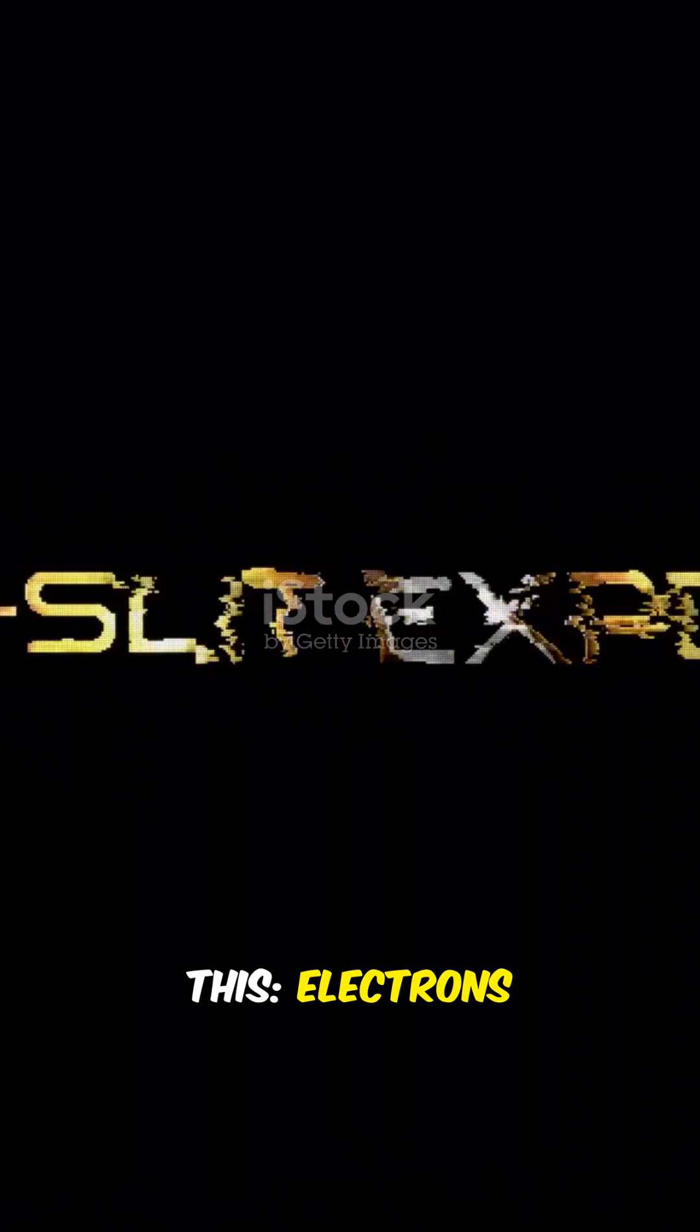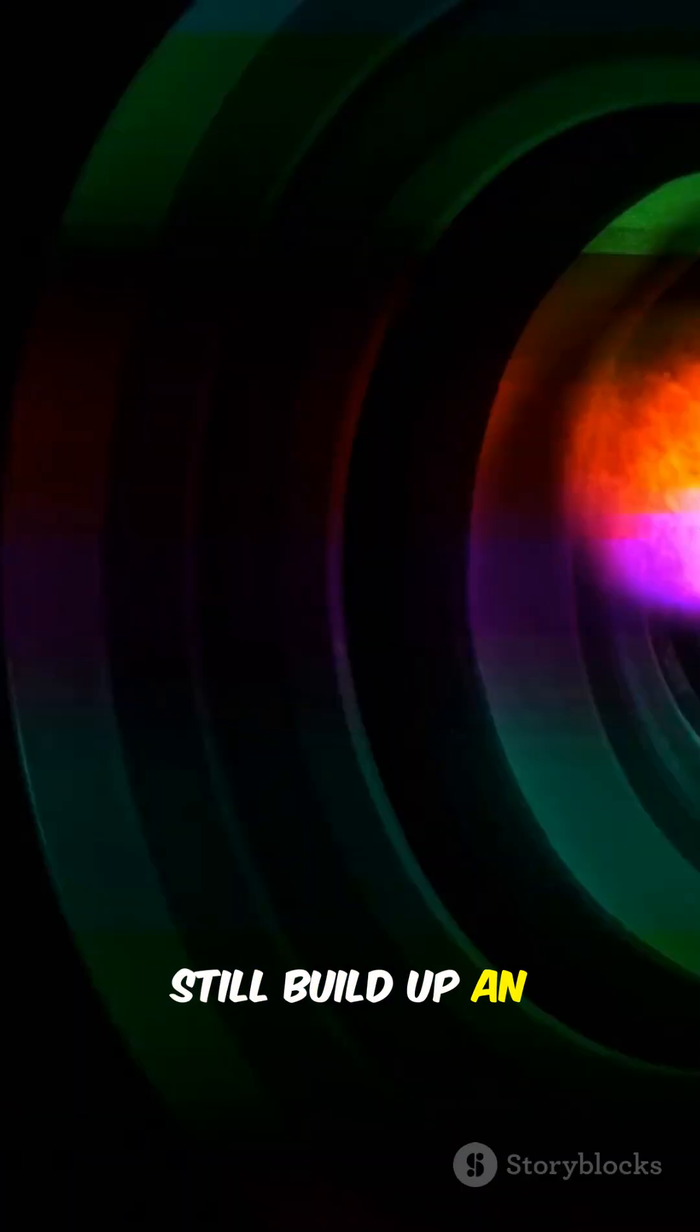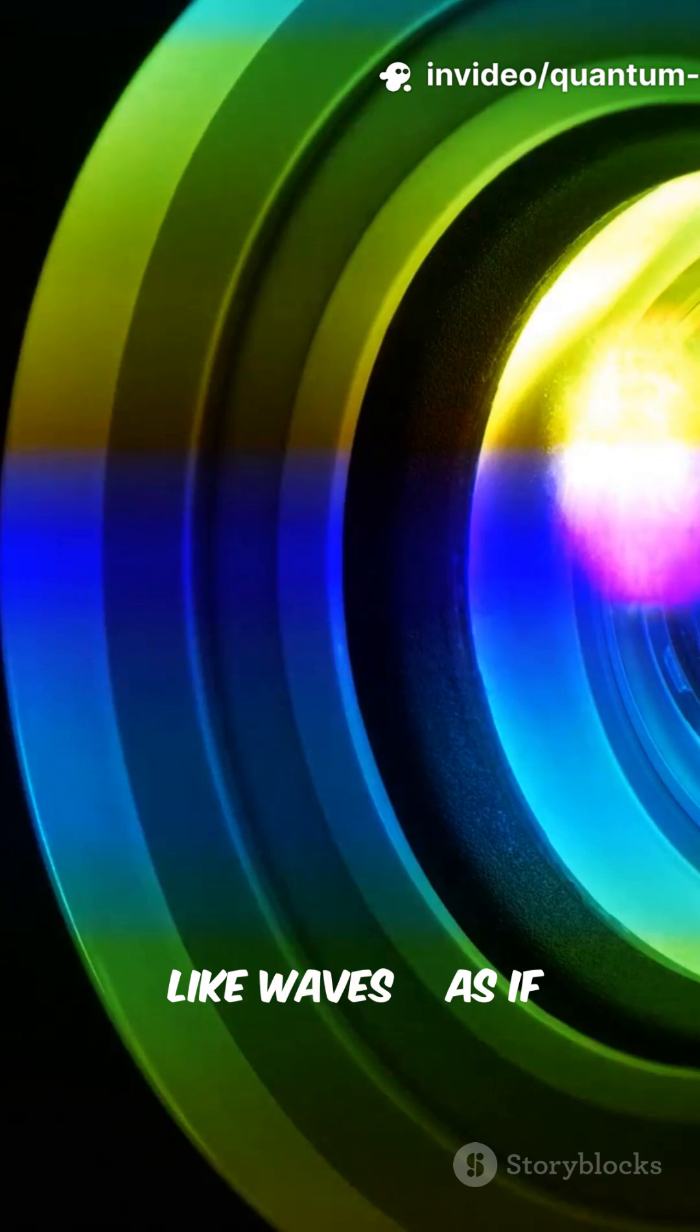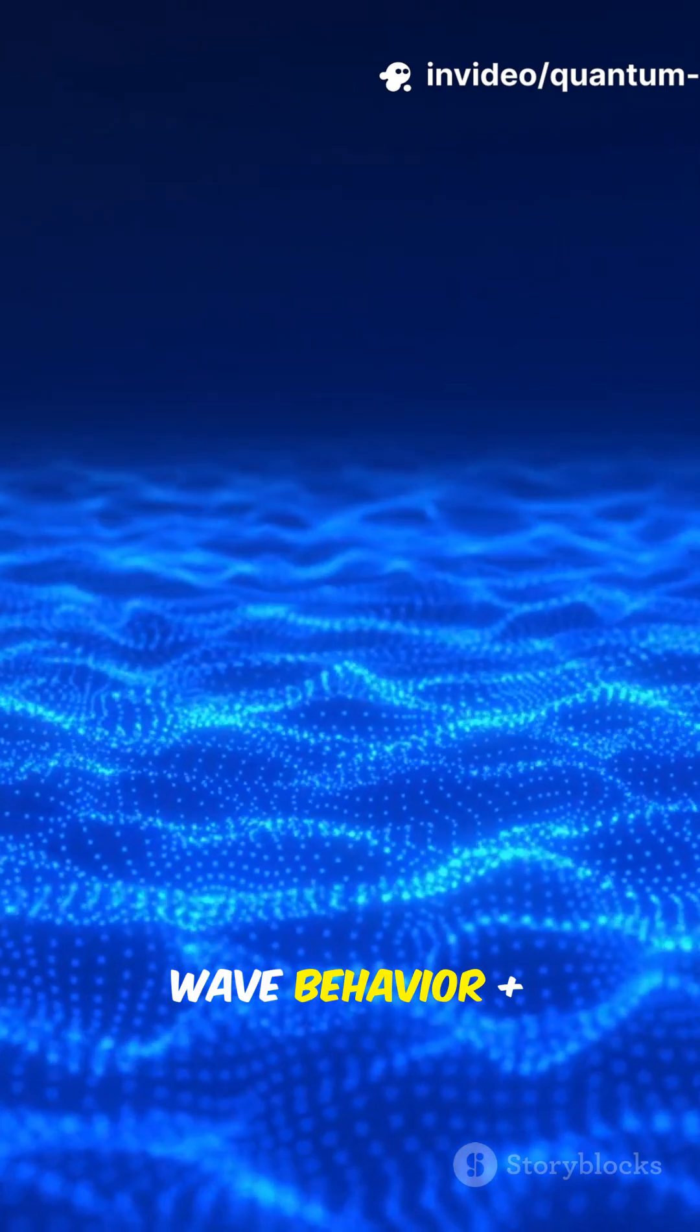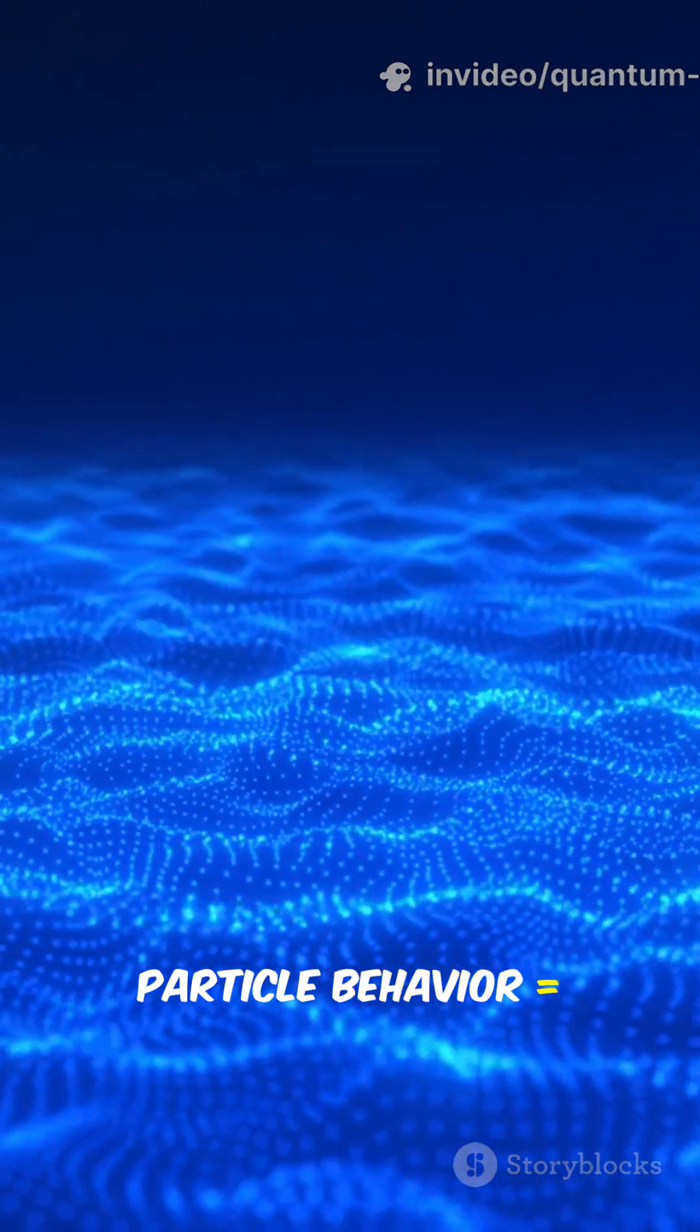The famous double-slit experiment shows this. Electrons fired one by one through two slits still build up an interference pattern, like waves, as if each electron goes through both slits at once. Wave behavior plus particle behavior, all mixed up.